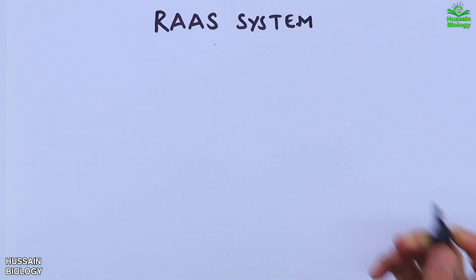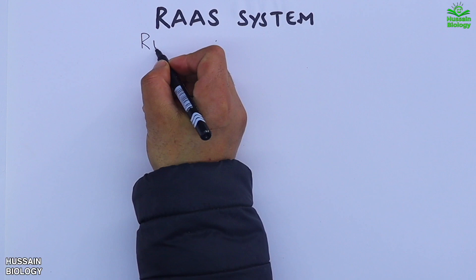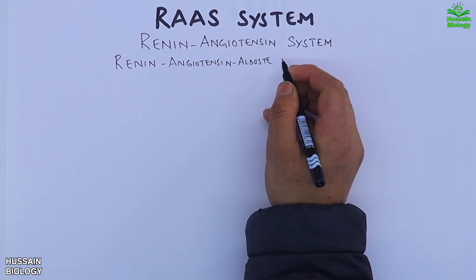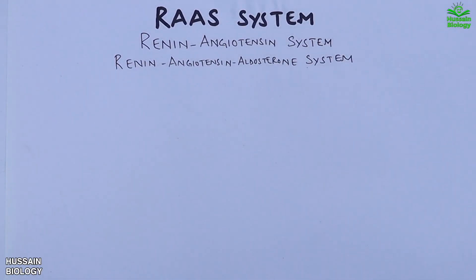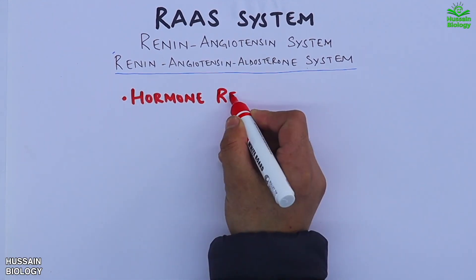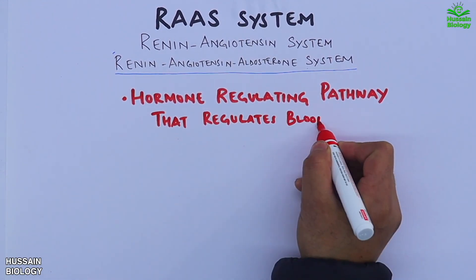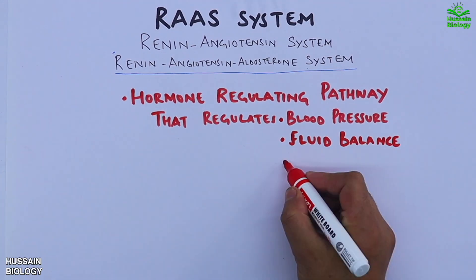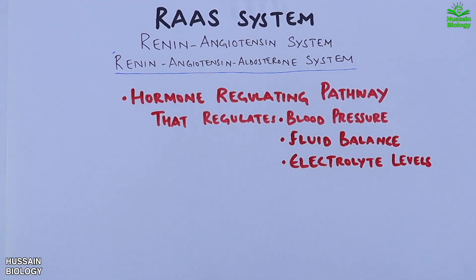In this video we are going to discuss about the RAS system, which is the Renin-Angiotensin System or Renin-Angiotensin-Aldosterone System. It's a hormone regulating pathway that regulates blood pressure, fluid balance, and electrolyte levels.